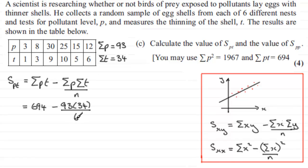Okay, well that's s_PT. Next up is to work out s_PP. So s_PP is going to be equal to, well, it's just like doing s_XX. We're going to have Sigma P squared, and then minus Sigma P all squared all over n.